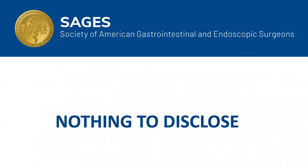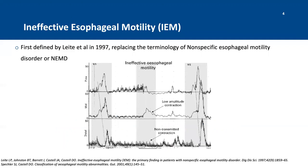I have nothing to disclose. Ineffective esophageal motility was first defined by Leite et al. back in 1997, originally replacing the terminology of nonspecific esophageal motility disorders, or NEMD. Based on conventional manometry, peristaltic contraction of less than 30 millimeters of mercury at the distal esophagus is associated with impaired bolus clearance, and therefore this was initially defined as more than 50% of swallows having a contraction of less than 30 millimeters of mercury.